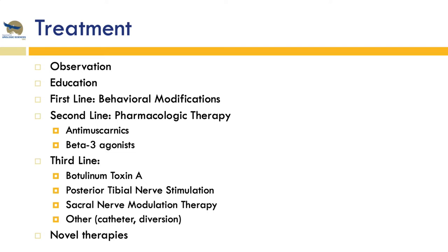The treatment options for OAB are many, so we'll go through all of these starting from conservative. There's observation and education as first-line, behavioral modifications, second-line pharmacological therapies, and third-line slightly more invasive therapies, as well as some novel therapies that have been looked at in the literature.